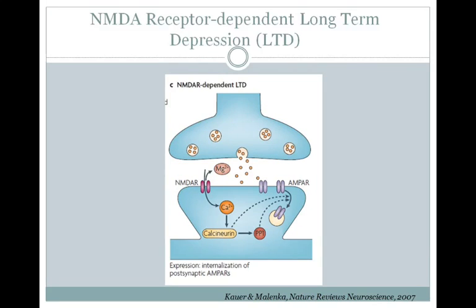In some neurons, activation of the NMDA receptor can lead to long-term depression, or LTD. Usually this happens if there is moderate activation of the NMDA receptor, allowing some calcium in, which can bind to calcineurin and go through a signaling cascade to cause the internalization of AMPA receptors. This means there will be fewer AMPA receptors to be opened by the glutamate being released from the presynaptic neuron, and so your resulting postsynaptic EPSP will be smaller.